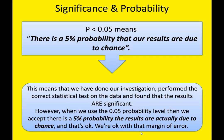The p stands for probability — there is a 5% probability that our results are due to chance. That means we've done our investigation, run the correct statistical test on the data set, and found the results are significant. However, when we use the 0.05 probability level, we accept that there is a 5% probability the results are actually due to chance. And that's okay — we're okay with that margin of error, happy to infer and generalize the results to the rest of the population, because we've said they're significant.